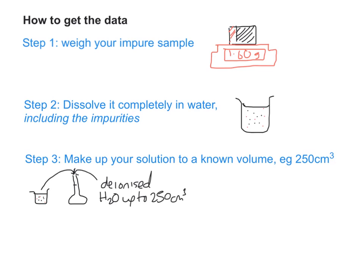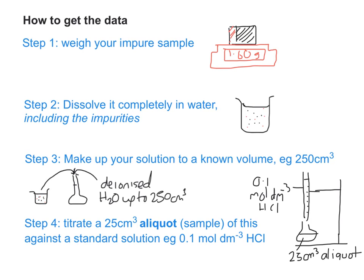So the next stage is to take samples of that 250 centimetres cubed. We call them aliquots, A-L-I-Q-U-O-T. These little samples can be titrated. So a 25 centimetres cubed sample is titrated against a standard solution of acid. Once you've done the titration, you then know how much HCl it took to neutralize the calcium carbonate in 25 centimetres cubed of your impure sample.